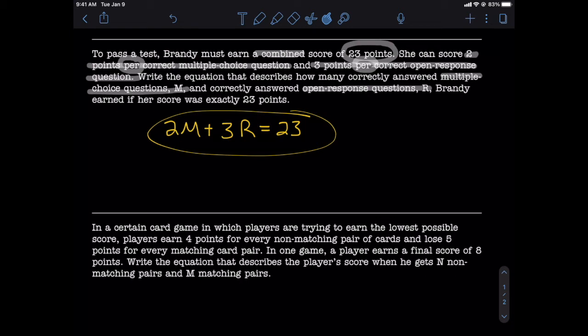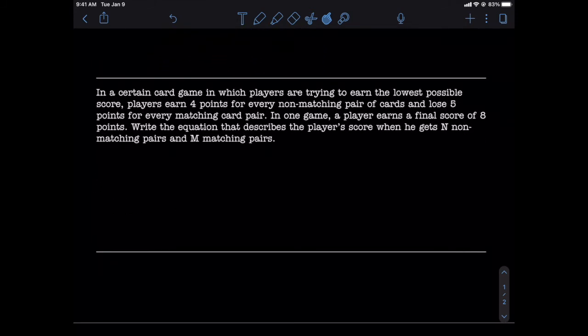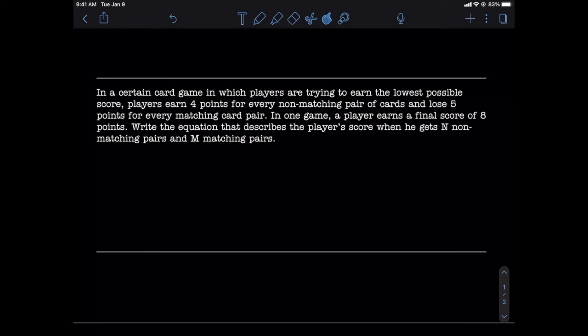Let's go ahead and take a look at another example to see if we got this down. Our next example reads, in a certain card game in which players are trying to earn the lowest possible score, players earn 4 points for every non-matching pair of cards, and lose 5 points for every matching card pair.